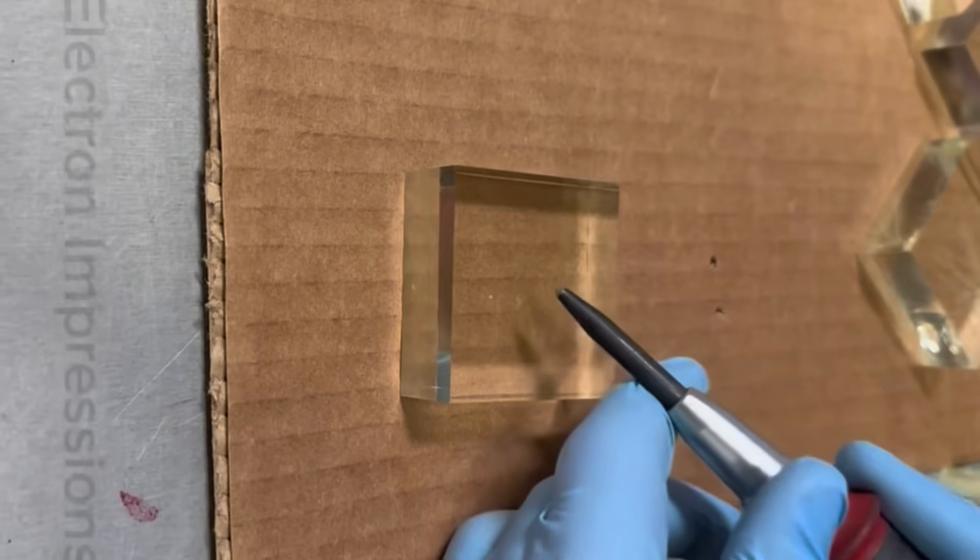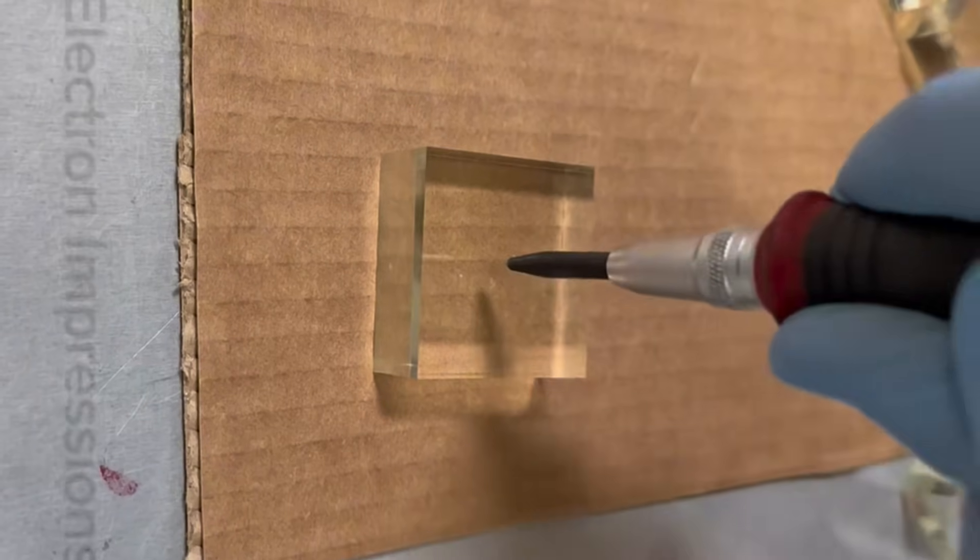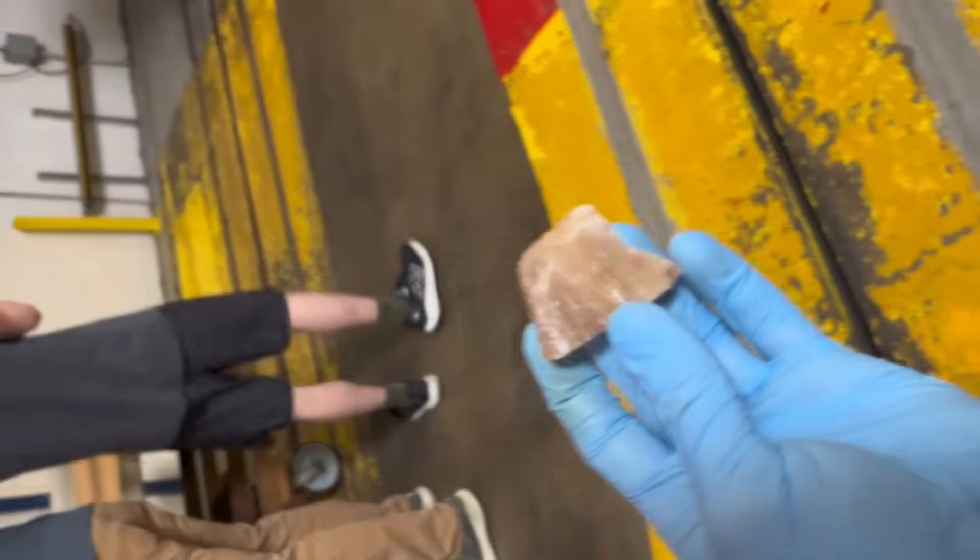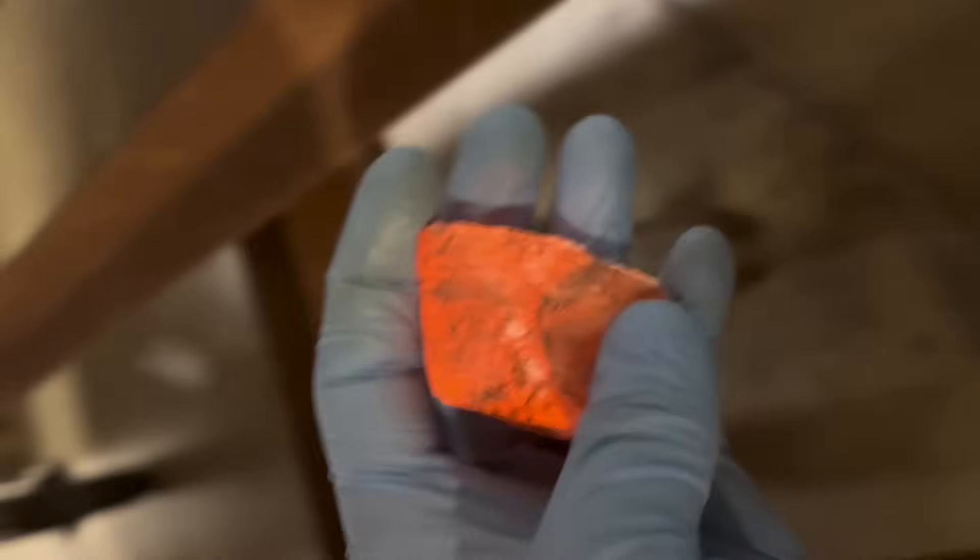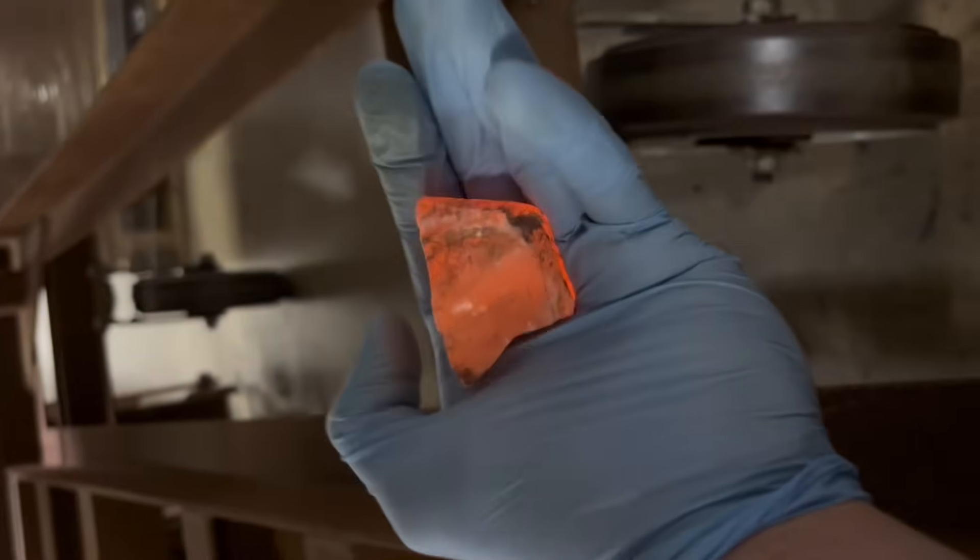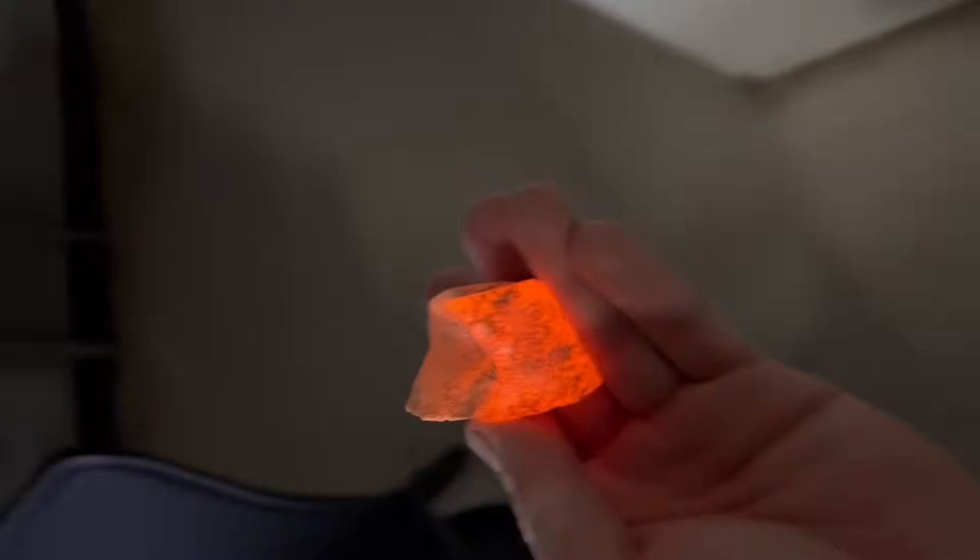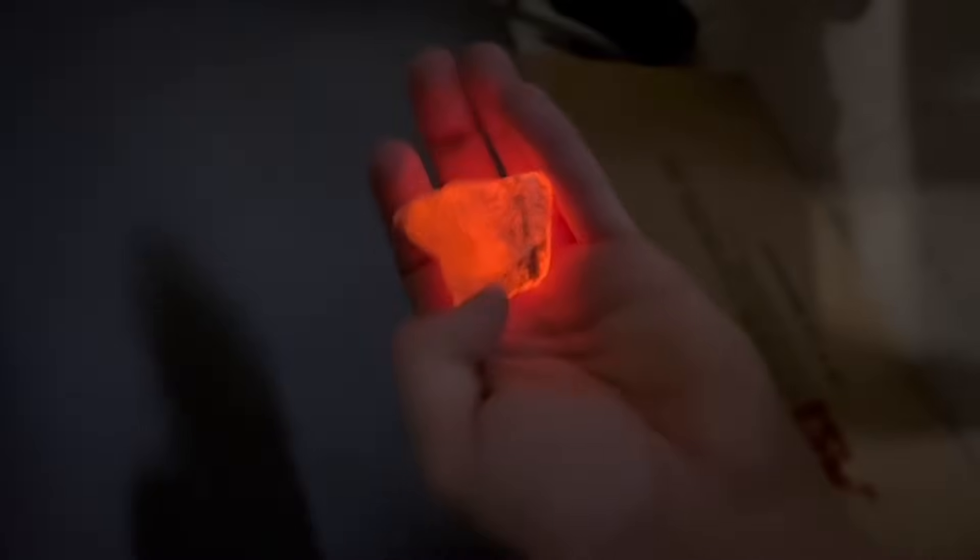Now, we're still working on getting a camera in the particle accelerator. But I'm going to take this rock and put it in the linac. So right after I remove it from the linac, it looks like a normal rock. Until I move it into some darkness, where we can see it starts to glow orange.